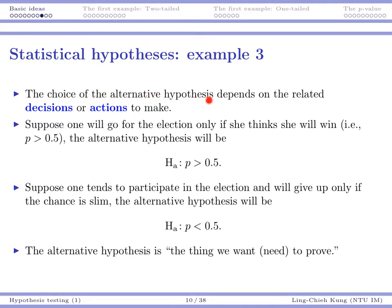The choice of the alternative hypothesis depends on the related decisions or actions to make. Suppose the scenario is that one will go for the election only if he or she thinks they are going to win. That means he wants to find strong evidence supporting that P is greater than 50%. So the default decision is to not go for the election. If I can have strong evidence showing that I will win, then I go for the election. As long as I do not have strong evidence showing that I will win, I will stay home. In that case, you state the alternative hypothesis as P greater than 50%.